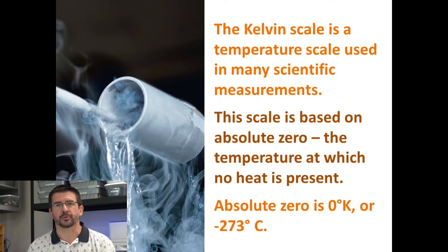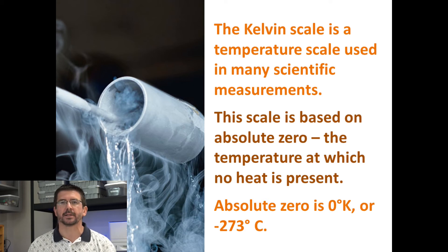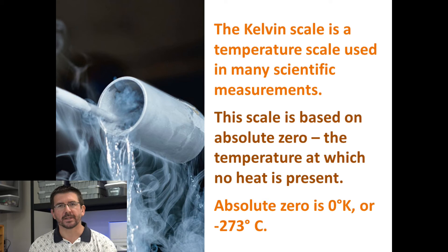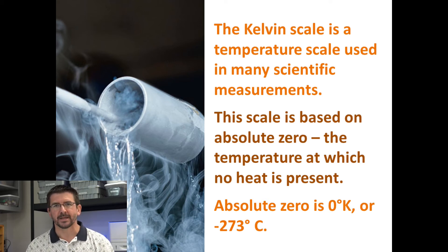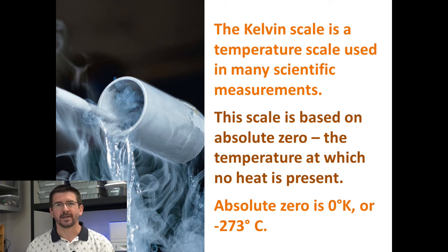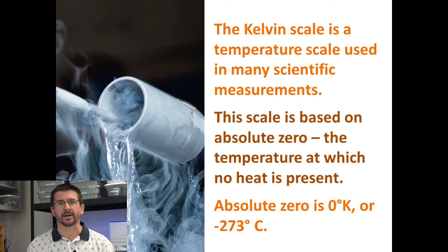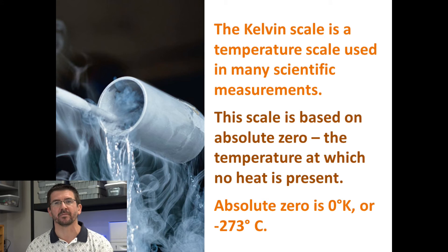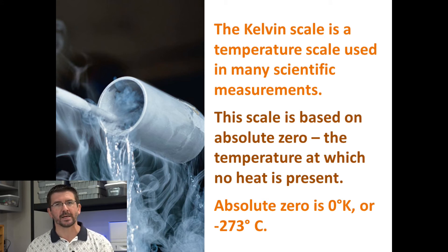The last temperature scale we're going to look at — one we won't use in class but that's used a lot in science — is called the Kelvin scale. The Kelvin scale is interesting because it's based on a point called absolute zero. Absolute zero is essentially the point where there is no heat in an object and no movement of molecules. Since heat comes from the movement of molecules, if you have no movement of molecules, you have no heat.